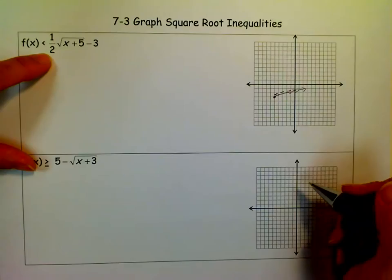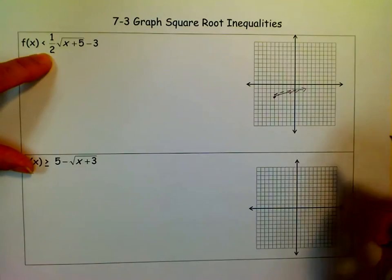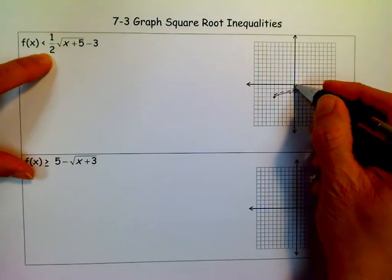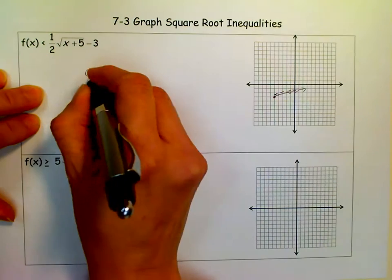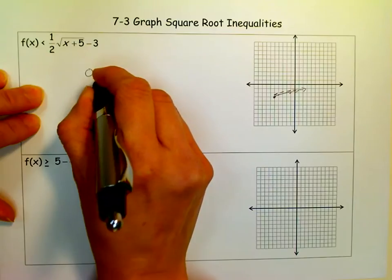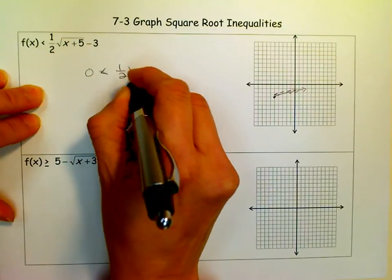Instead of remembering all the different rules, I just pick a point anywhere on the graph. I usually pick (0,0) because it's the easiest point to pick. What I do is put zero in for y and zero in for x, and then see if this is true.